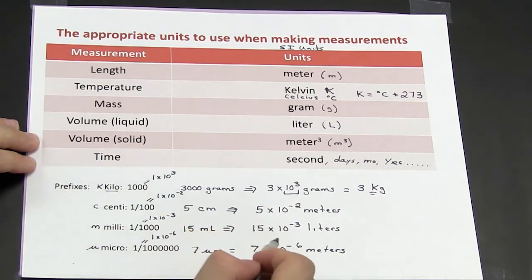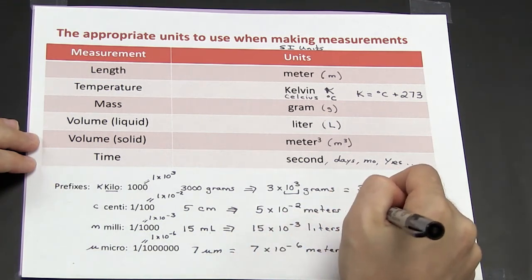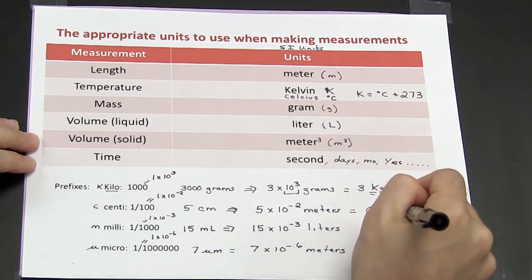I can take these three and write them out in decimal form. So 5 times 10 to the minus 2 meters is the same thing as 0.05 meters.